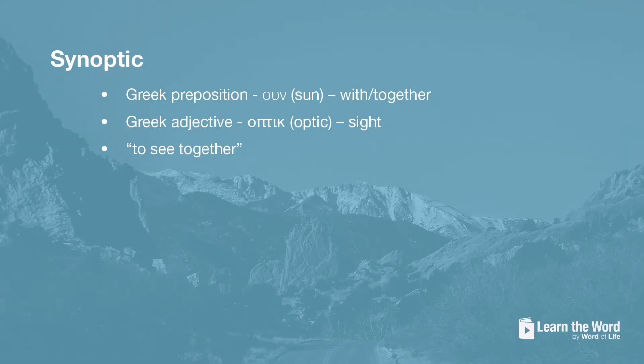By way of review, the Gospel of Luke is one of the synoptic Gospels. The word synoptic comes from two Greek words: the preposition 'sun' meaning 'with' or 'together,' and the Greek adjective 'optic' meaning 'sight.' The Greek verb 'opsomai' also has the same root, which means to see. So synoptic means to see together. The synoptic Gospels, which include Matthew, Mark, and Luke, are books with the same basic outline of events surrounding the life of John the Baptist and then Jesus Christ, and include similar content.